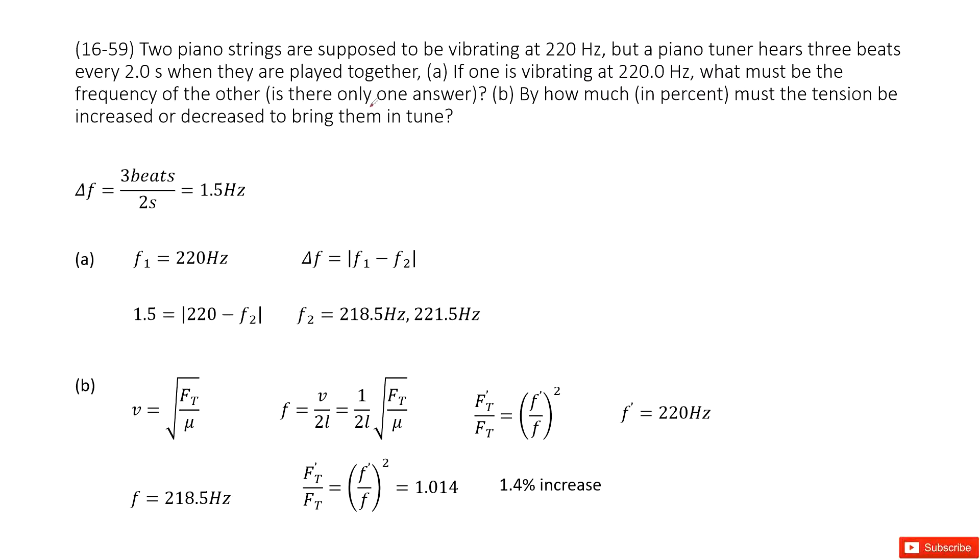But the piano tuner heard 3 beats over 2 seconds. This told us the beat's frequency. So we can write it there: beat's frequency, 3 beats over 2 seconds, just 1.5 hertz.